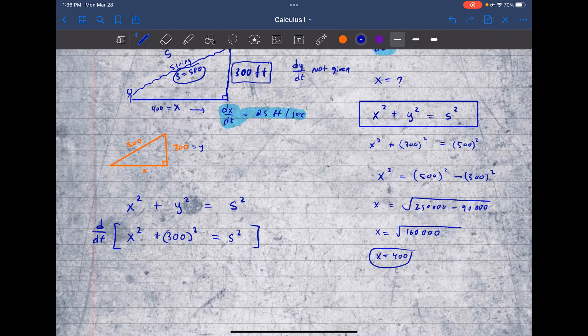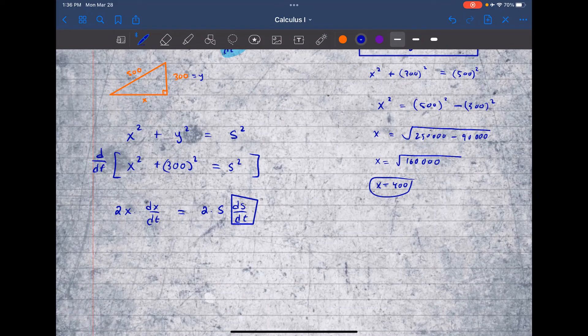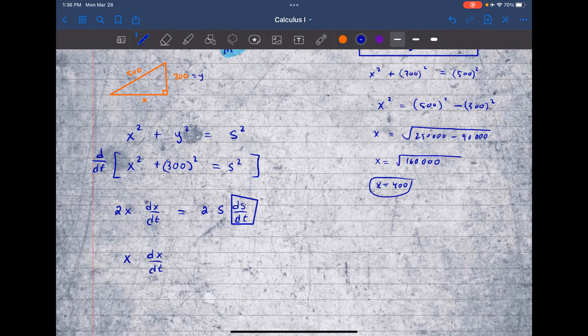So we have derivative of x squared, that's 2x dx/dt, derivative of 300, that's 0, is equal to s squared, that's 2s ds/dt. And this is what we're looking for. So we can simply isolate. Divide both sides by 2s. So the 2 cancels out, you have x times dx/dt all over s. That's the rate for ds/dt. Now simply plug in the numbers.